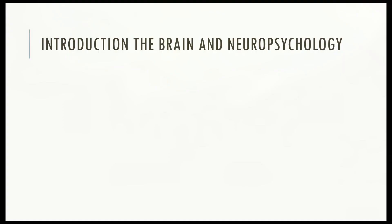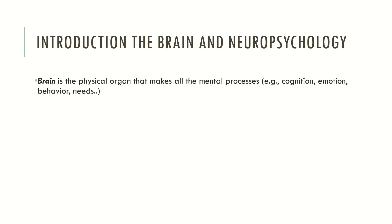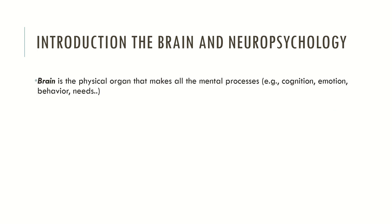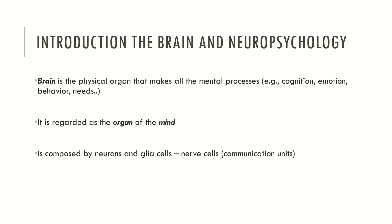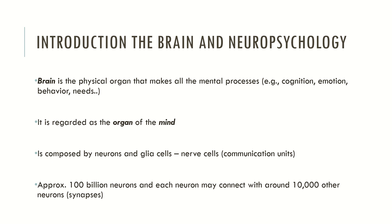Now let's see what the brain is and how neuropsychology and neuroscience regard the brain. The brain is the physical organ that makes all mental processes available or possible — mental processes such as cognition, emotion, behavior, psychological needs, interpersonal relationships and so forth. Neuropsychology and neuroscience regard the brain as the organ of the mind. The brain is composed by neurons and glial cells, which are described as the nerve cells and the fundamental unities of the nervous system. The brain has approximately 100 billion neurons and each neuron may connect with around 10,000 other neurons. Neurons are connected by synapses, but we will see this in the future.